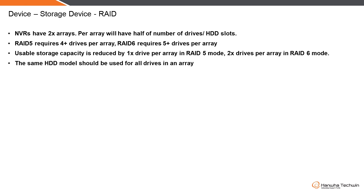In order to configure RAID 5 you need to have at least four-plus hard disks per array. If your NVR has only four then you need all four. If you need RAID 6, you need to have at least five-plus, which means six hard disks per array. The usable storage will be reduced by one drive per array in RAID 5 mode and two drives per array in RAID 6 mode.